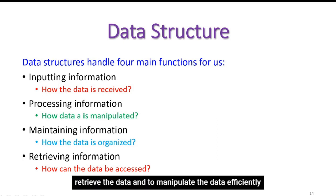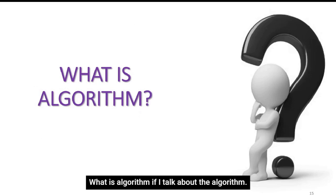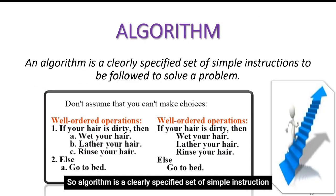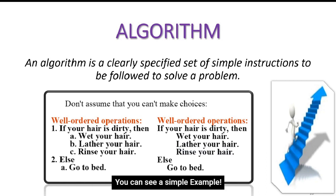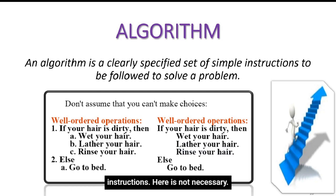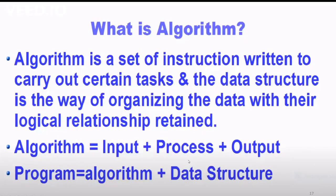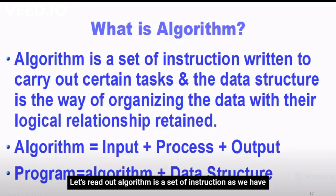Now let's see what is algorithm. Algorithm is a clearly specified set of simple instructions to be followed to solve a problem. In simple words, we can say algorithm is a step-by-step procedure—here you can see a simple example of well-ordered operations. This is a very simple example of algorithm. Here is mentioned some other definitions: algorithm is a set of instructions written to carry out certain tasks, and data structure is the way of organizing the data with their logical relationship.